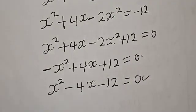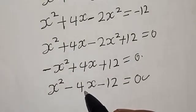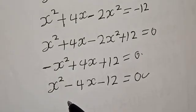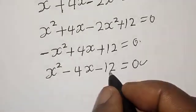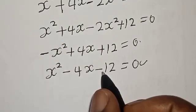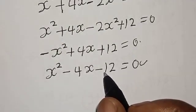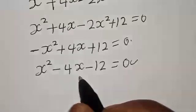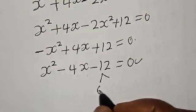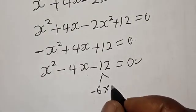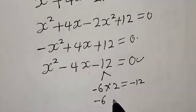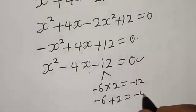This is a quadratic equation and we can solve this using the quadratic formula or factorization method. In this case, I'm going to use the factorization method. The coefficient of x squared is 1, the coefficient of x is minus 4, and the constant is 12. We look for two numbers such that their product is minus 12 and their sum is minus 4. If we have minus 6 multiplied by 2, we get minus 12, and minus 6 plus 2 gives minus 4.